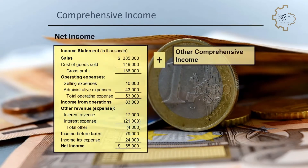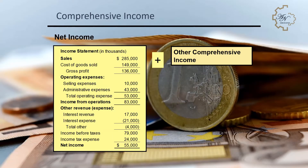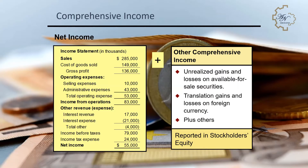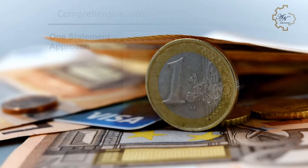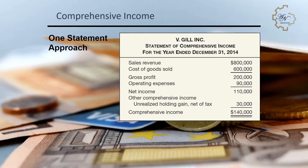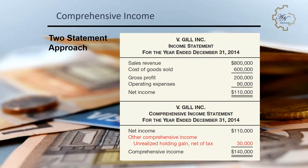Comprehensive income includes all changes in equity during a period except those resulting from investments by owners and distributions to owners. It includes all revenues, gains, expenses, and losses in net income, plus all gains and losses that bypass net income but affect stockholders' equity — such as unrealized gains/losses on available-for-sale securities and foreign currency translation gains/losses. Companies may display it as a single continuous statement or two separate consecutive statements.